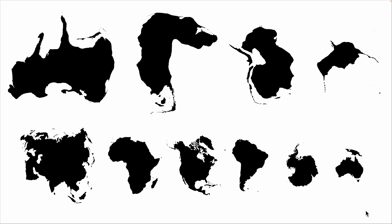Shout out alexarthur94, viewer and patron of the channel, who submitted this baller bit of artwork here. It's basically a size comparison between the continents on Kreetak and the continents on Earth — which I just love that you took the time to do this, Alex. And you can really see the scale difference. This is Picard. This is Esri. They both have more area than Eurasia. Jannar is bigger than Canada. And Degra is about South America. So yeah, Kreetak is a thick boy. Shout out alexarthur94. Cheers, man.